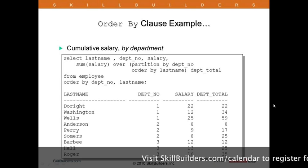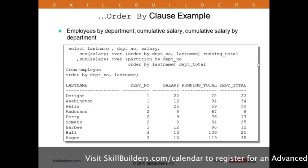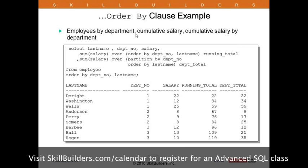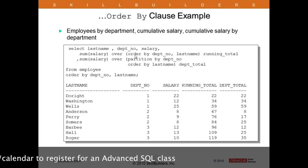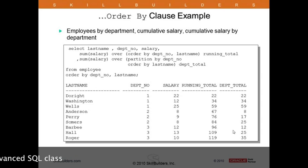This slide shows employees by department with cumulative salary and cumulative salary by department. You can do both of course — running totals and running totals within department. The first column has SUM(salary) OVER with an ORDER BY but no partition. The second adds in a partition so totals restart per department. You can have any combination of these capabilities.